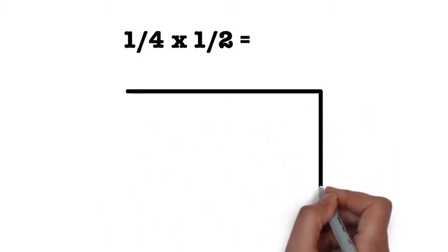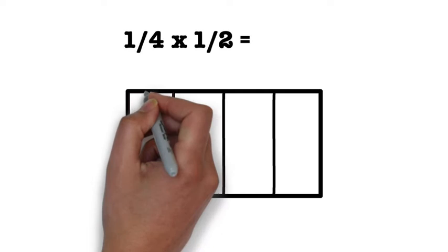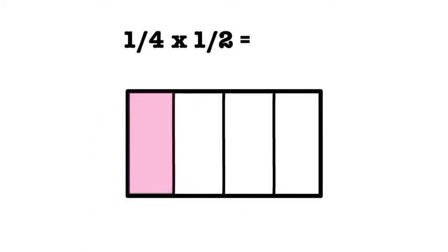We are going to draw a rectangle and divide it vertically into four equal pieces since the denominator for one-fourth is four. Next, we are going to shade in one of the four pieces to represent the fraction one-fourth.